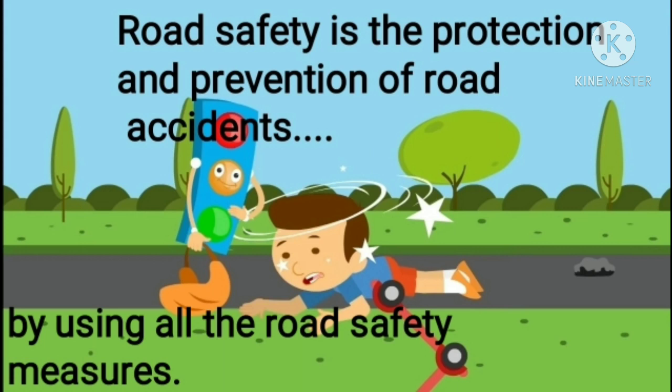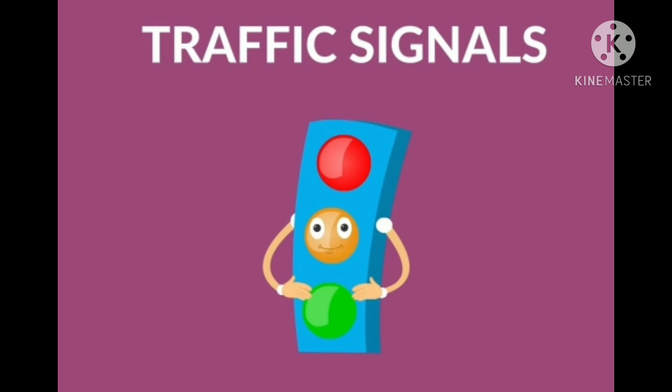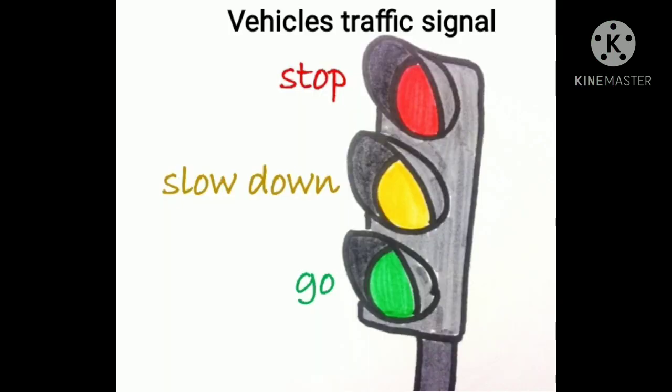To begin with, let us learn about the traffic signals. There are two types of traffic signals. One is vehicle traffic signals — that is, for the vehicles. The red says stop, the yellow says slow down, and the green light says go. These three signal lights are to be followed by all the vehicles that move on the road.